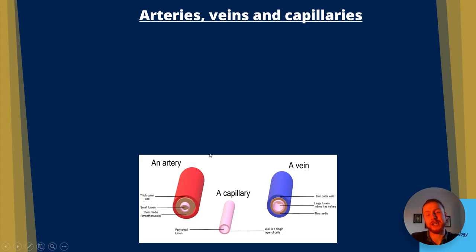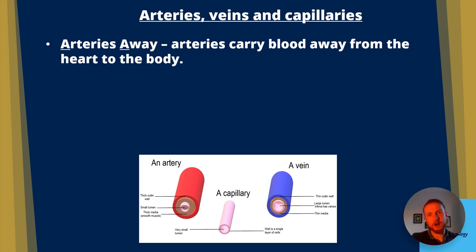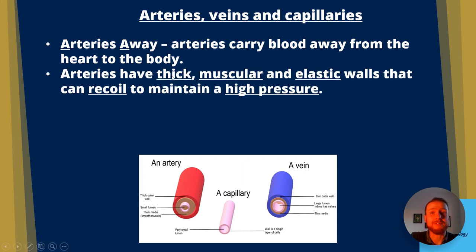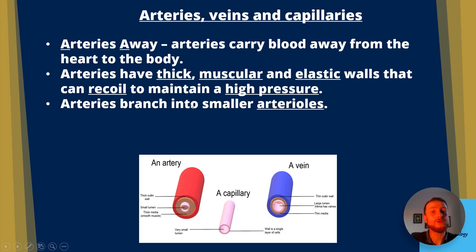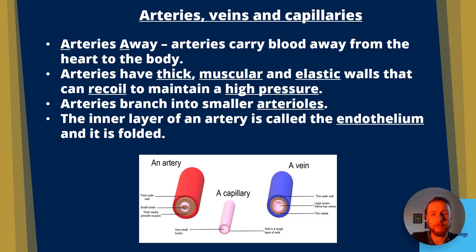Arteries carry blood away from the heart to the body — remember 'arteries away' for the heart, but 'arteries arrive' for all other organs. Arteries have thick, muscular, and elastic walls that can recoil to maintain high pressure. They branch into smaller arterioles. The inner layer of an artery is called the endothelium, which is folded, allowing it to recoil and regulate blood pressure.